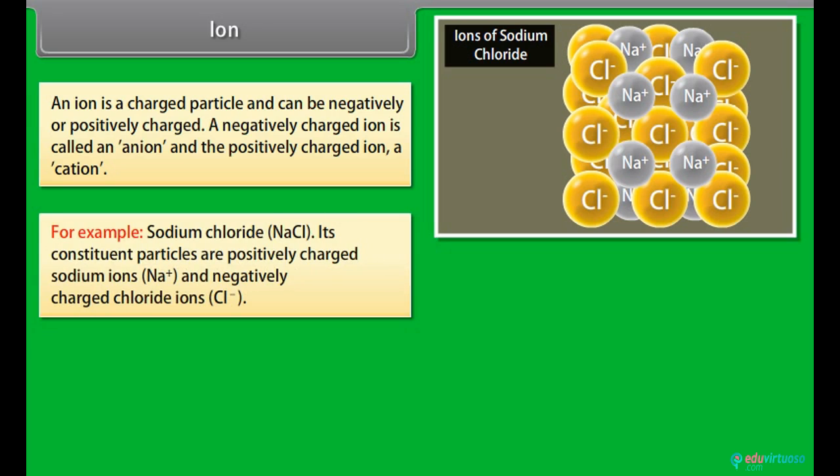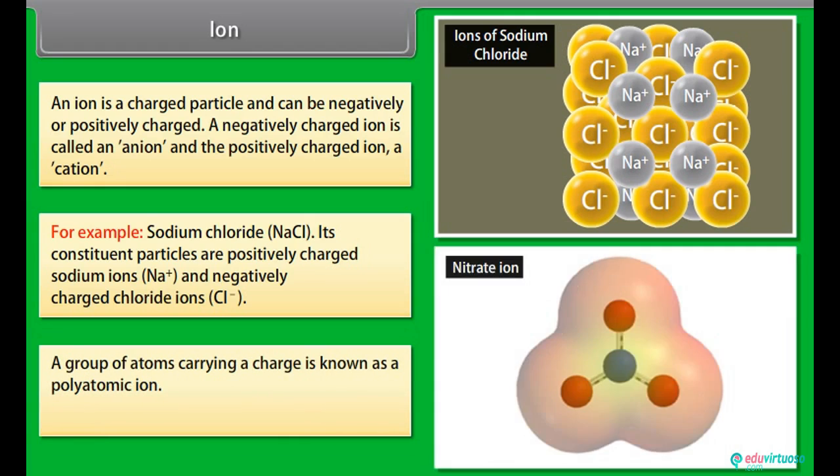For example, sodium chloride. Its constituent particles are positively charged sodium ions and negatively charged chloride ions. A group of atoms carrying a charge is known as a polyatomic ion. For example, nitrate ion.